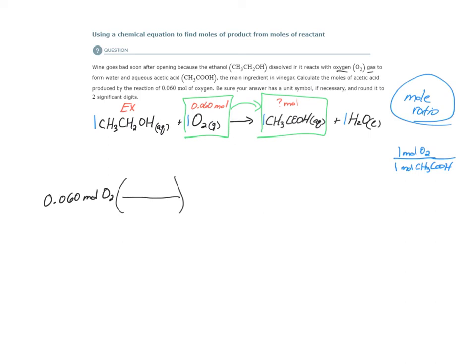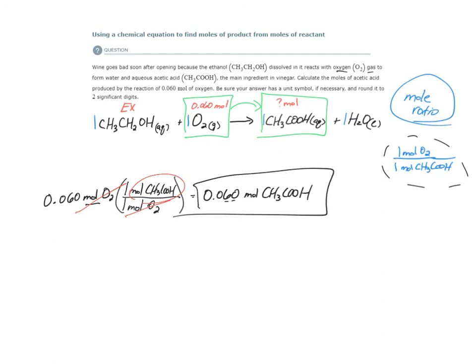Because I have moles already, I can use this conversion. One mole of O2 produces one mole of CH3COOH. Check our units - moles of O2 is gone, now I have moles of CH3COOH. Let's do the math. The math will be 0.060 moles of CH3COOH. They want us to round to two significant digits, and we already have two. This is our answer.